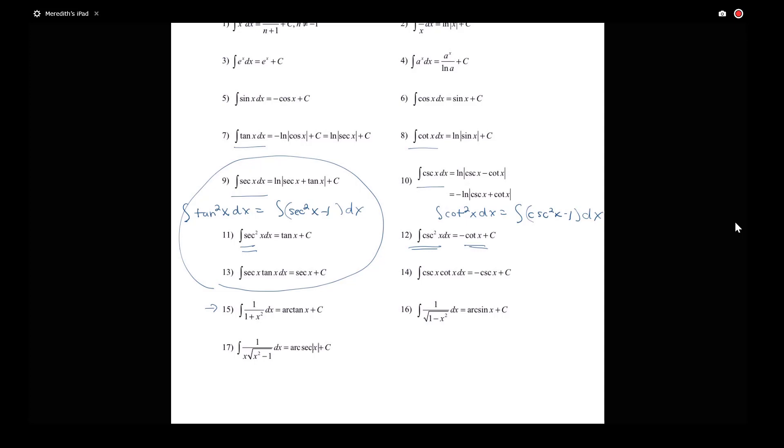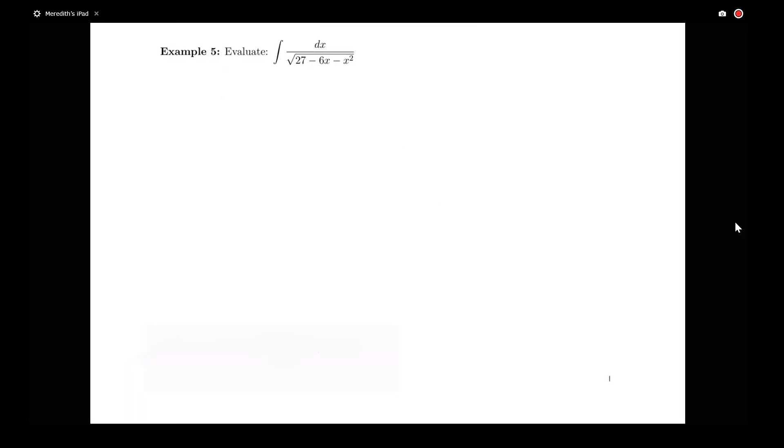But in my given problem, I do just have a single square root in the denominator. I don't have something outside of that square root. So it seems like maybe what I have here could be related to some sort of arc sine. So let's recall that the integral of 1 over the square root of 1 minus x squared dx is arc sine of x plus c.